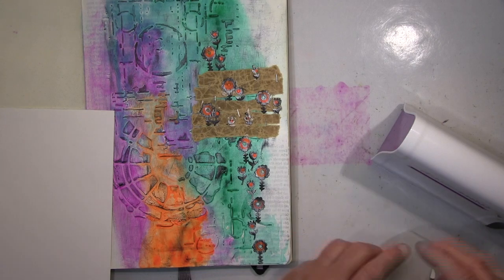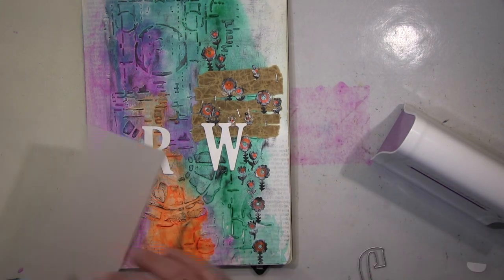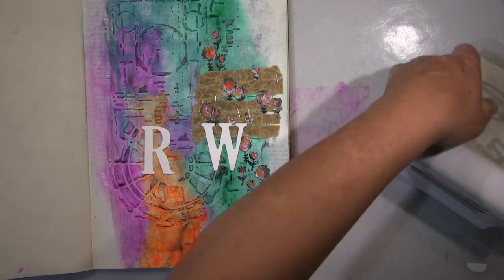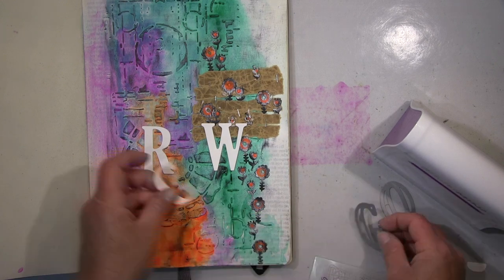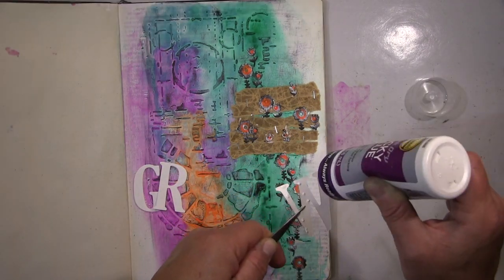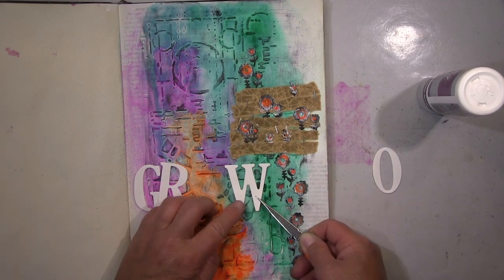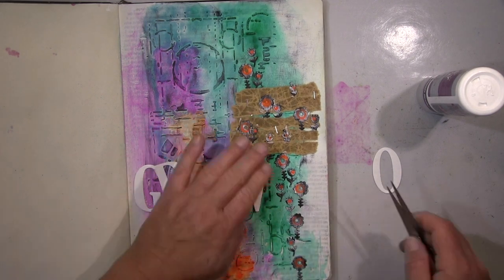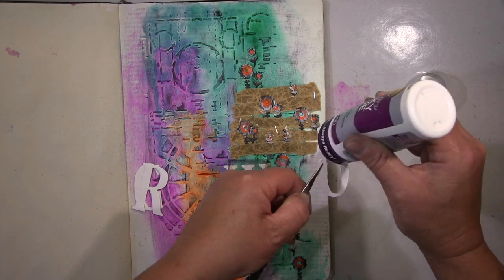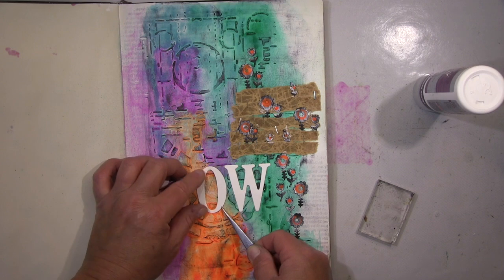Now I will cut out some dies here and as I said before, it will be the word GROW. Ich hab dann hier mit Stanzen das Wort GROW ausgestanzt, und zwar heißt das wachse oder wachsen in dem Fall, wachse als Imperativ, und werde das auch weiß lassen, da kommt nichts mehr dran. Ich werde das dann nur noch schattieren nachdem ich das geklebt habe.